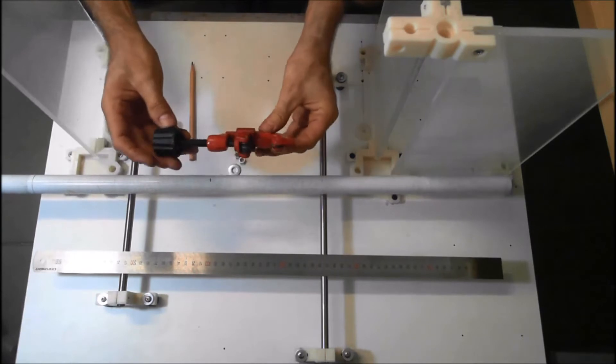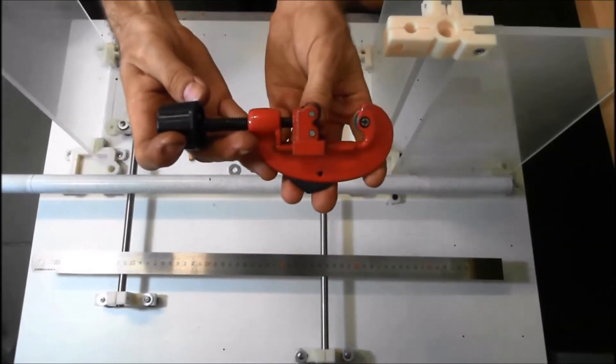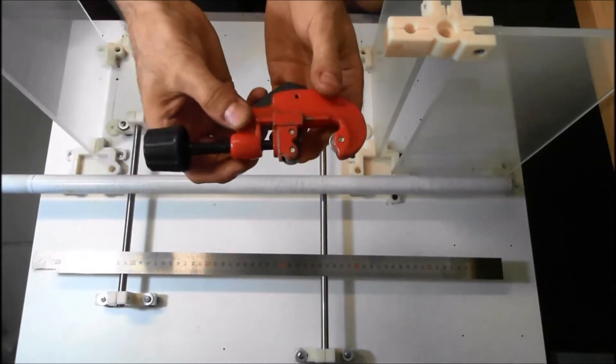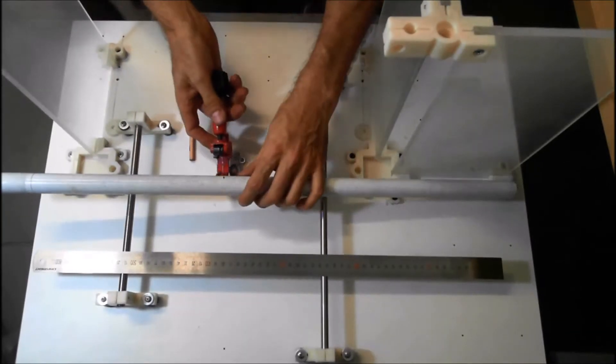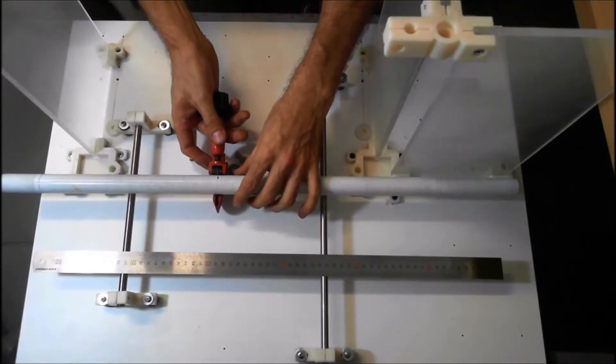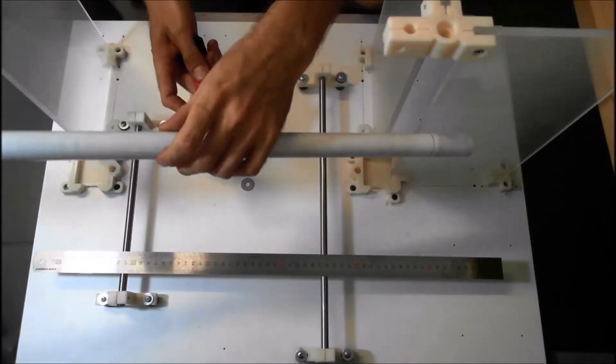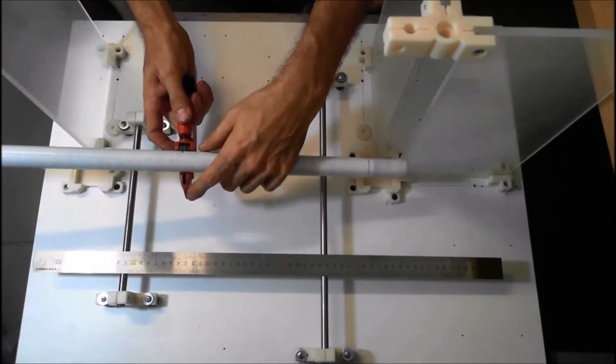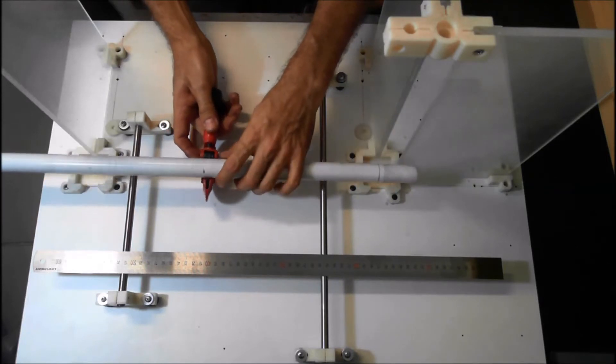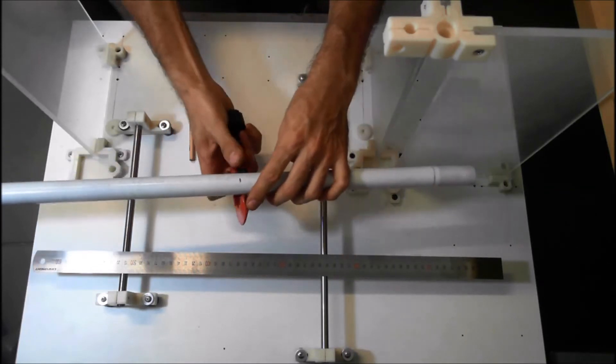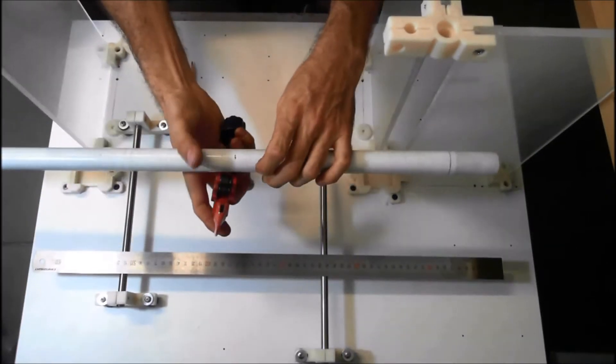Then we're going to cut it. The easiest way to cut it is with a tube cutter. It's a cheap tube cutter, probably like 5 bucks. Just make sure you're using it the right way. Line the cutting wheel up with the mark.